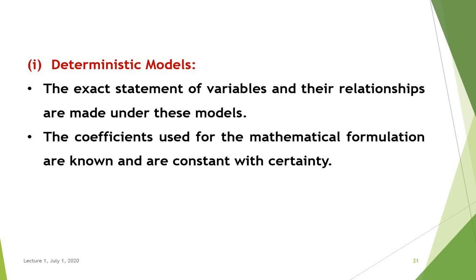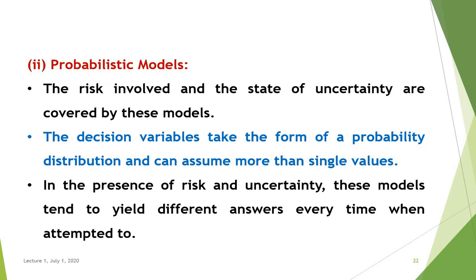In deterministic models, the exact statement of variables and relationships are made. The coefficients used for the mathematical formulation are known and constant with certainty. Probabilistic models cover the risk involved and the state of uncertainty. Here, the decision variables take the form of probability distributions and can assume more than single values. In the presence of risk and uncertainty, these models tend to yield different answers every time whenever attempts are made.